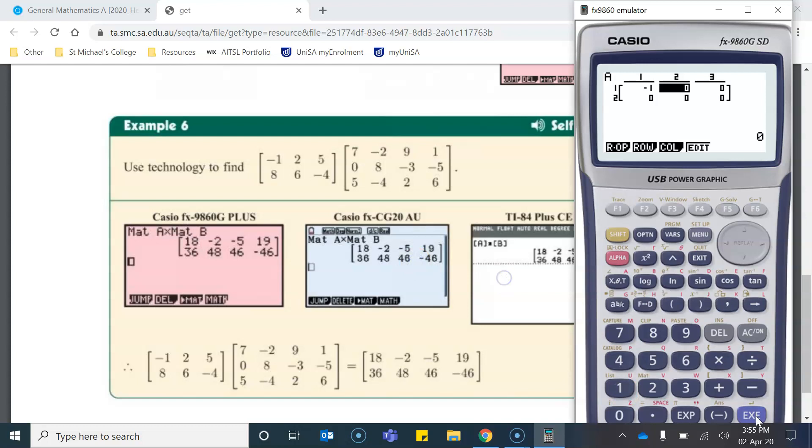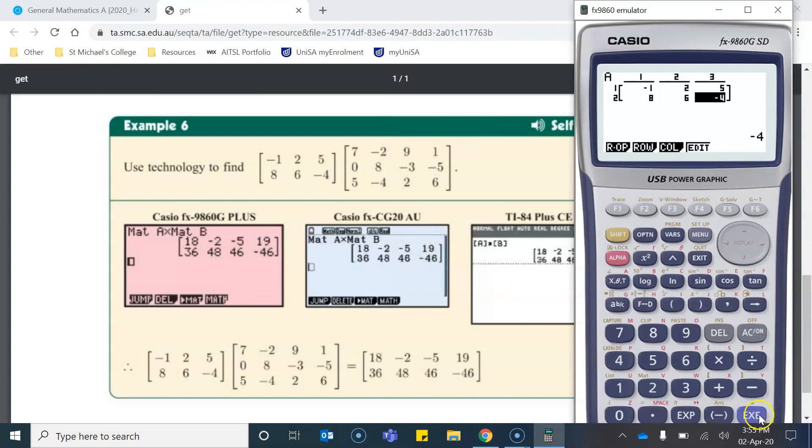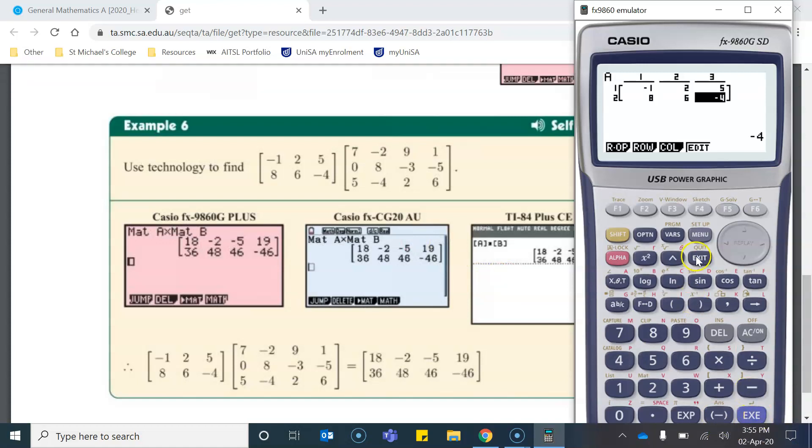Negative 1, execute 2, execute 5, 8, 6, negative 4. And once I've entered that all in, I click exit, and it brings me back to this screen.